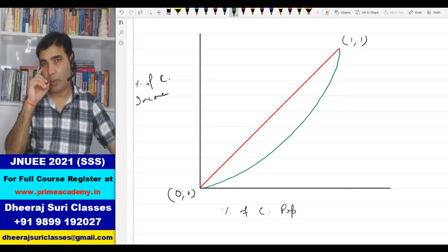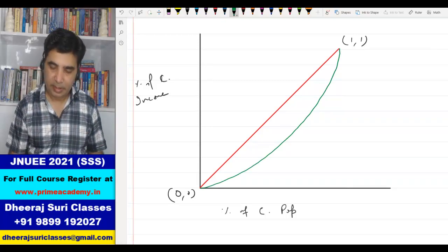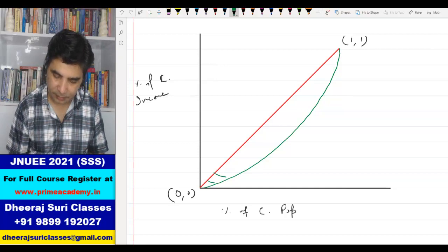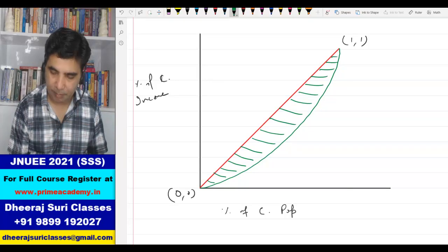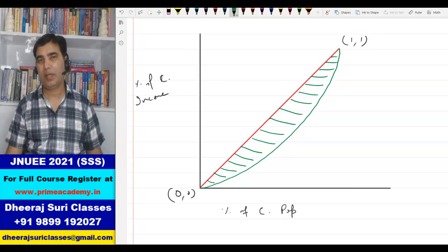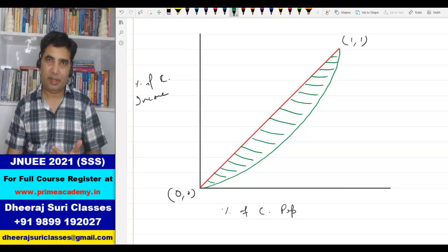Now what is Gini coefficient? This region between the line of equality and the Lorenz curve is represented by the Gini coefficient. How can we measure it?